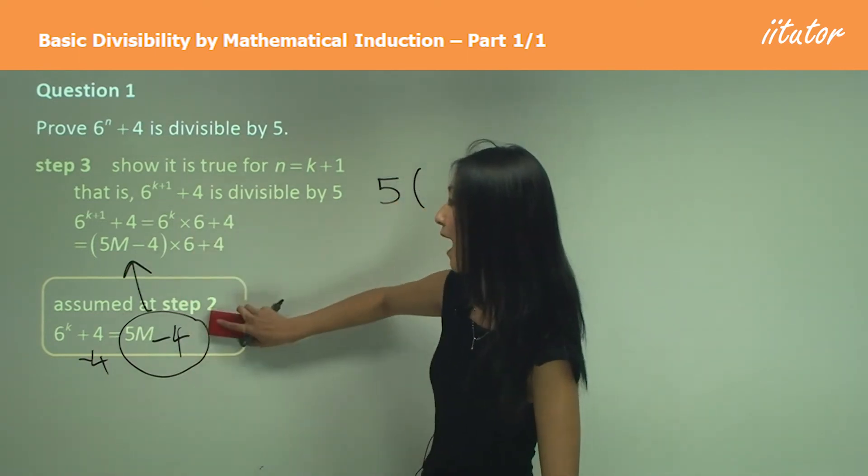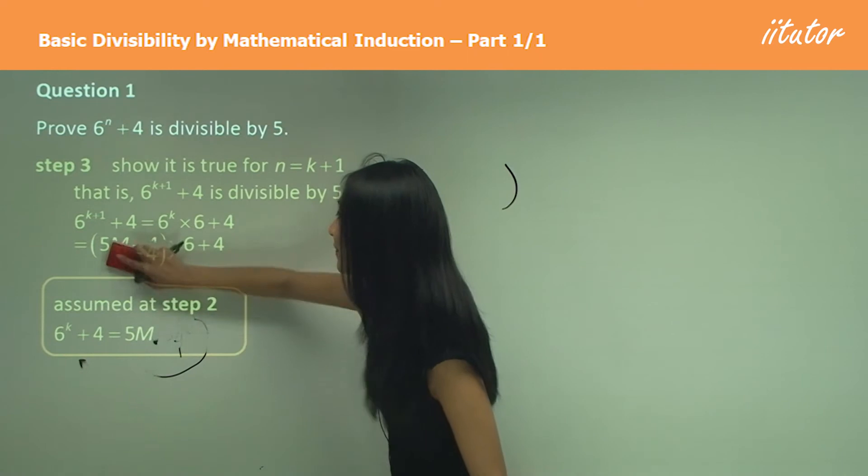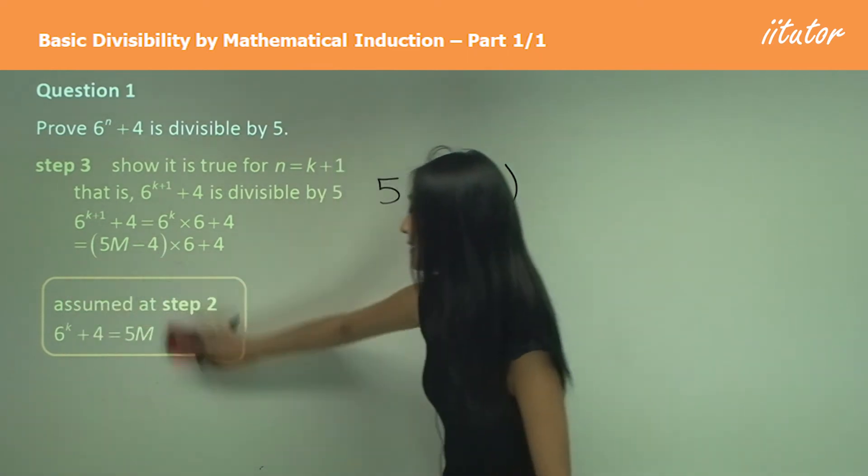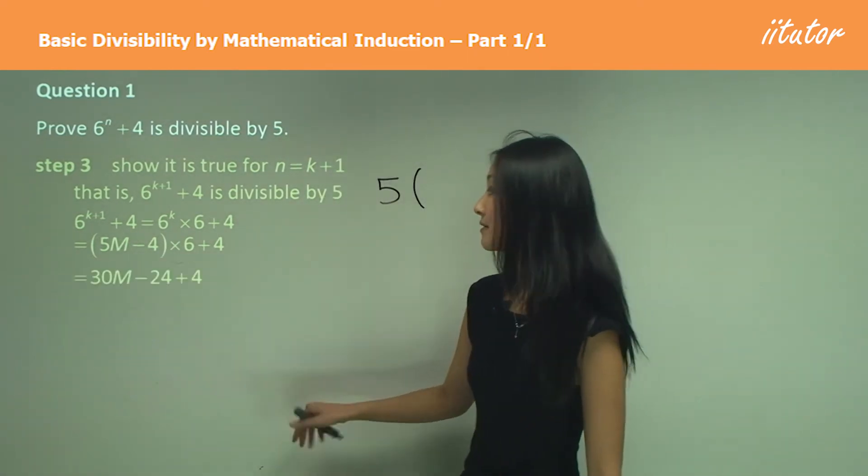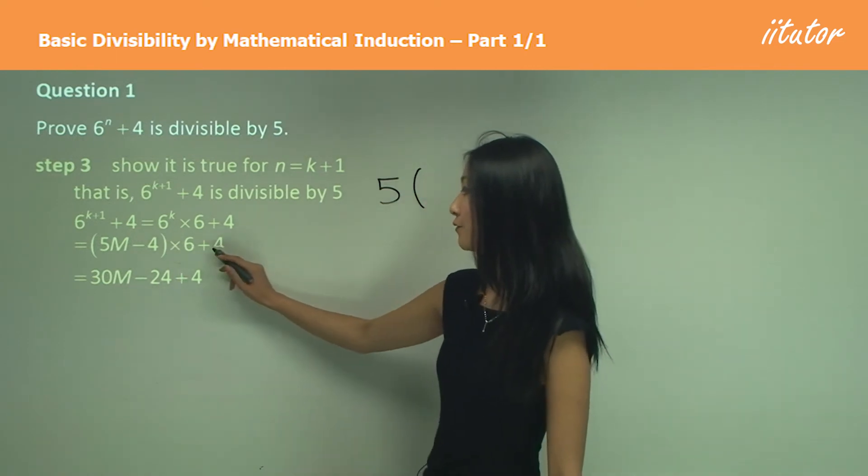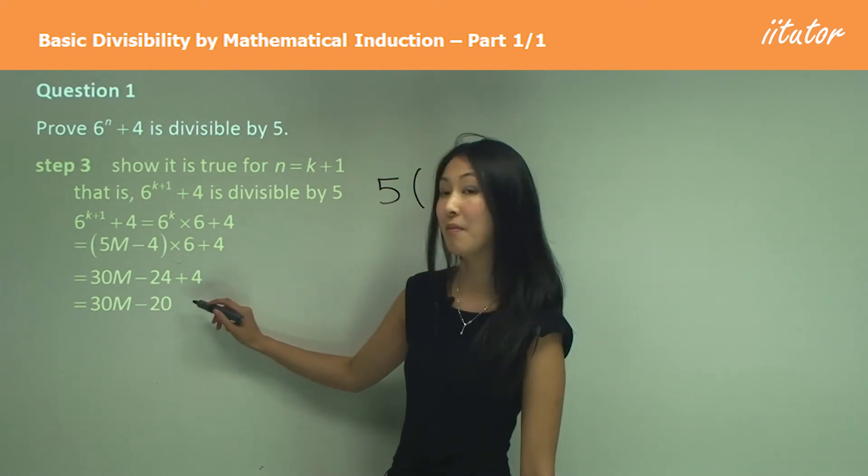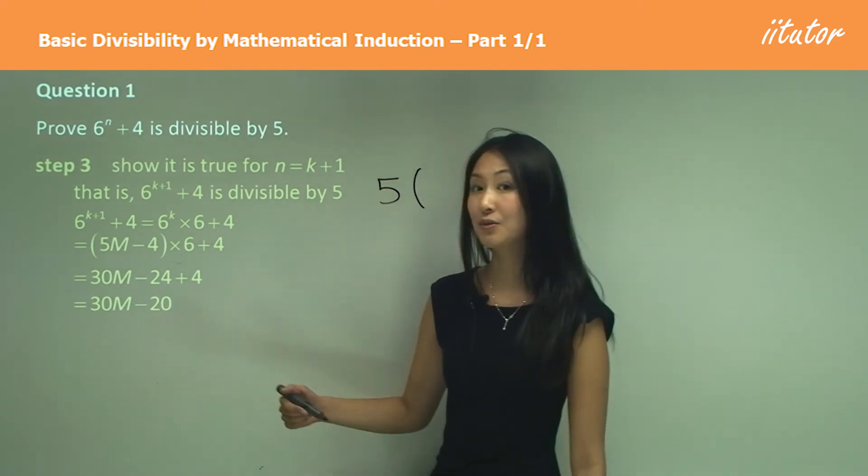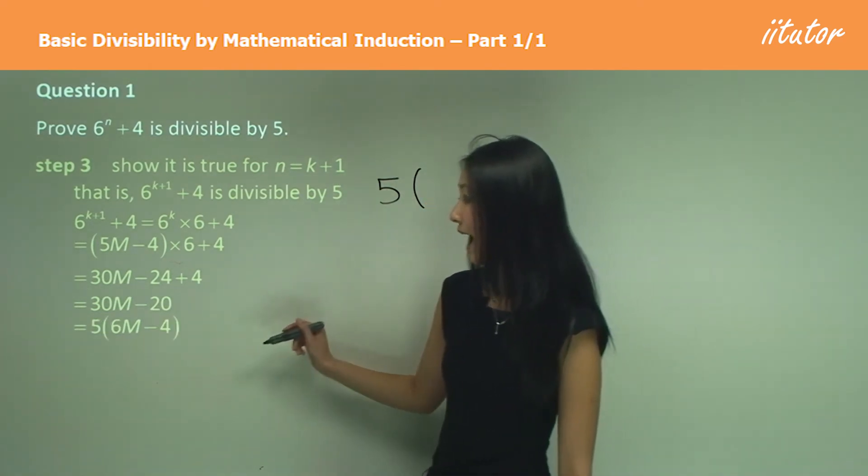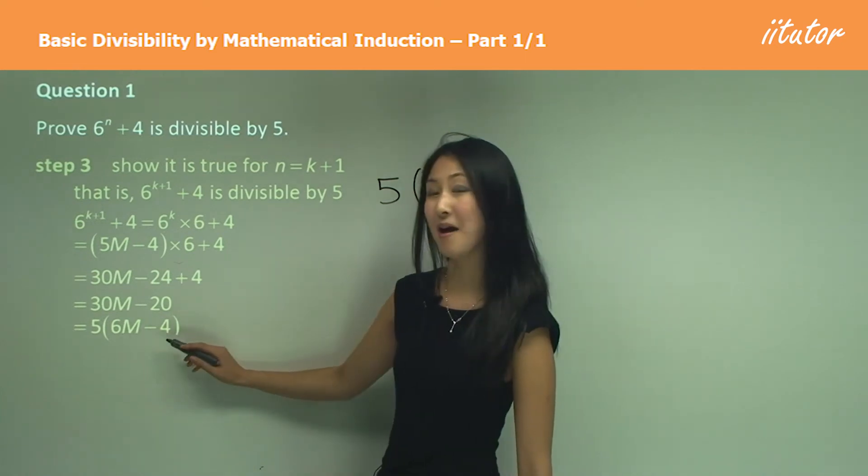So instead of 6^k, I've written 5m minus 4, and now I just want to expand that. So 5 times 6 gives me 30m, negative 4 times 6 is minus 24 plus 4, which is 30m minus 20. And factorizing out 5, that leaves me with 6m minus 4.